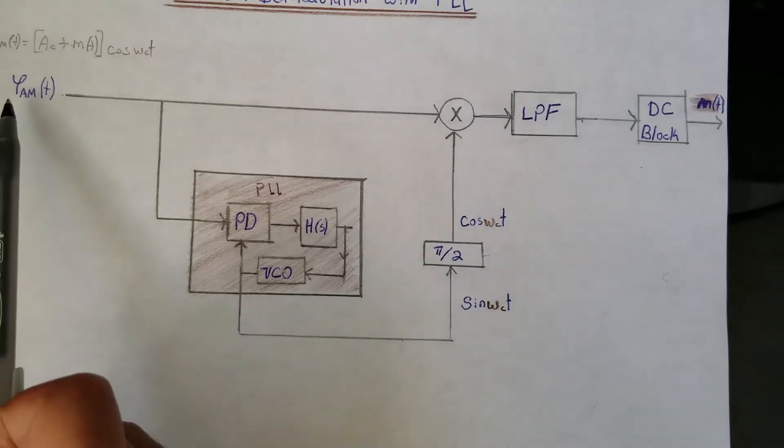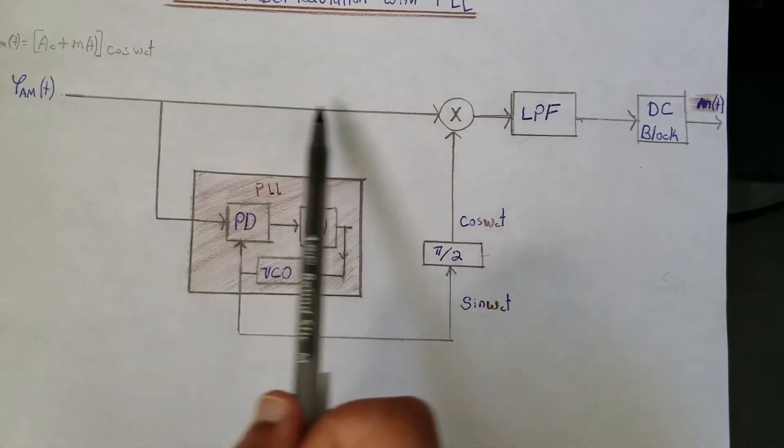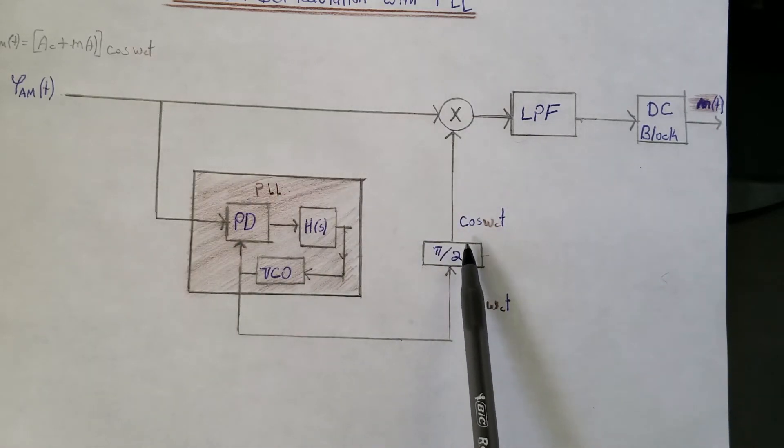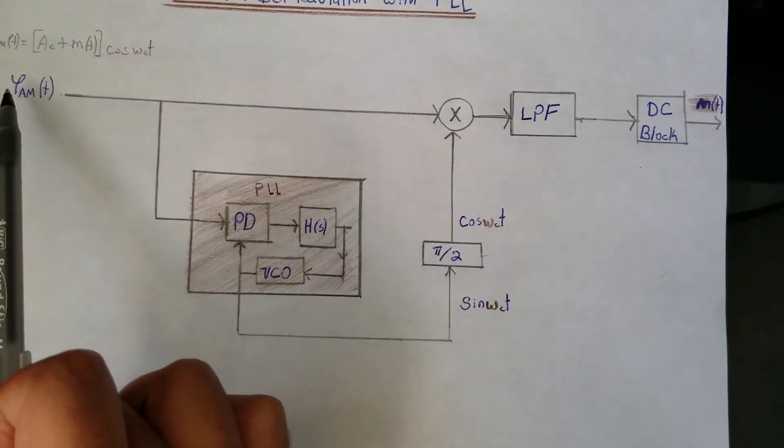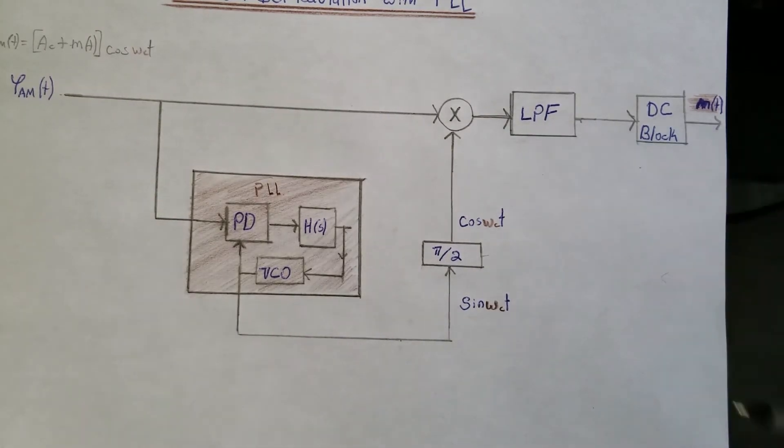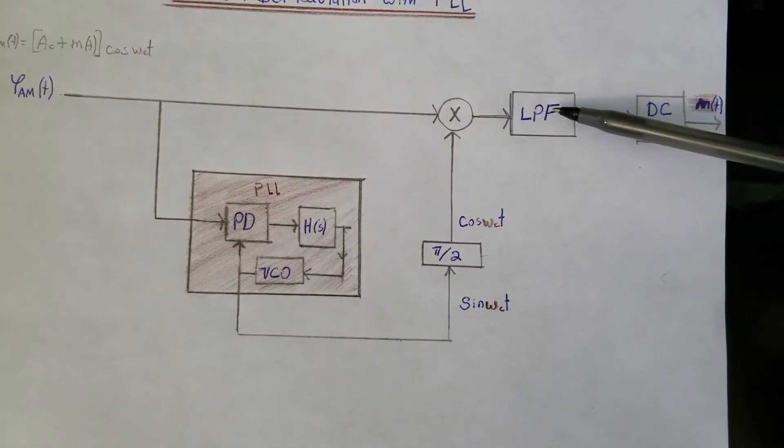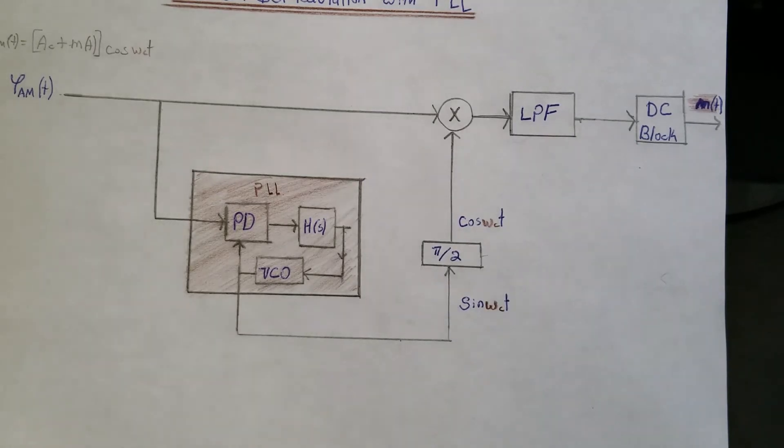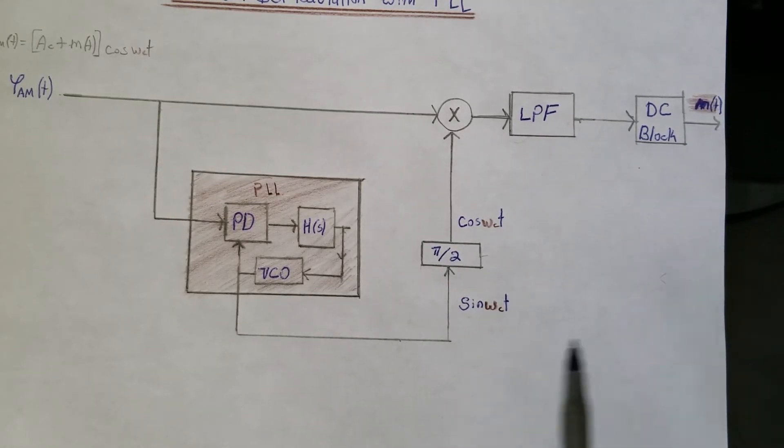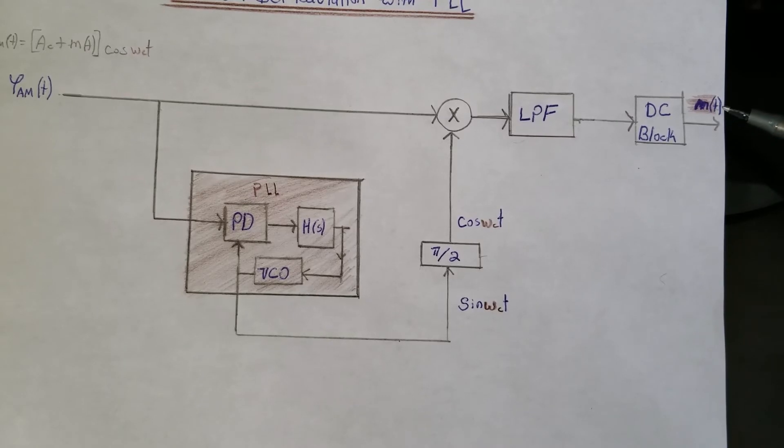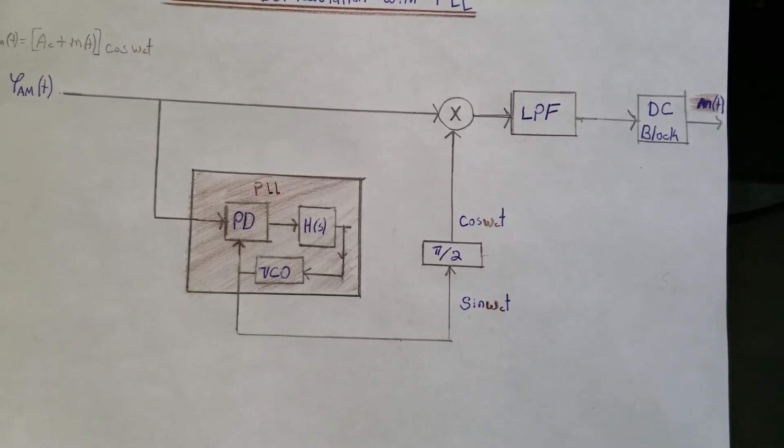So this is the modulated AM signal and it's being multiplied with the oscillator at the exact same frequency, and I'm using a low-pass filter to filter out the high frequency component and a DC block to get rid of the DC component, and I'm able to extract my message signal at the very end. Very cool.